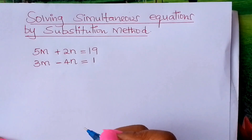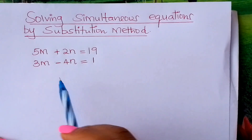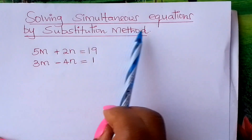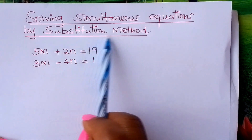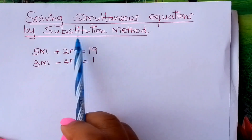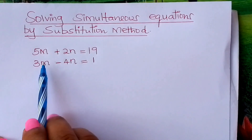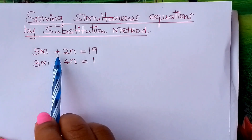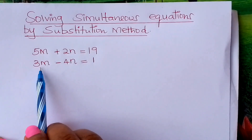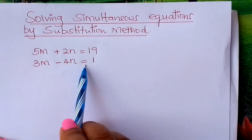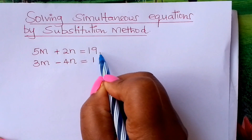Welcome learners to Form 1 Mathematics. I'd like us to practice on how to solve simultaneous equations by substitution method. We look at these two: 5m plus 2n equals 19, and 5m minus 4n equals 1. How do you solve them by substitution method?